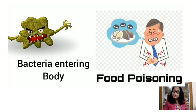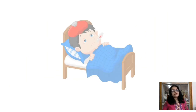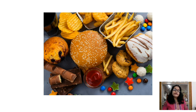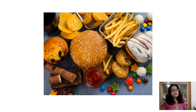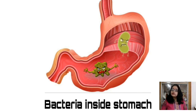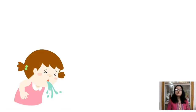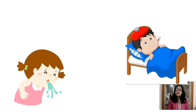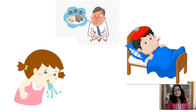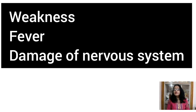Contaminated and unhygienic food makes us ill. For example, junk food or ready food that we love to eat — if they are contaminated, within several hours of eating this type of food it affects our stomach. The most common symptoms of food poisoning are vomiting, nausea, severe pain in the abdominal region, and diarrhea. In severe cases there may be weakness, fever, and damage to the nervous system.